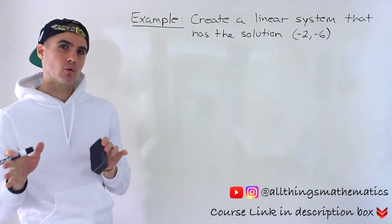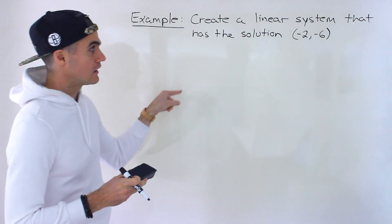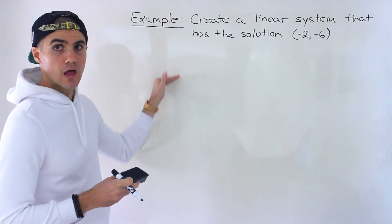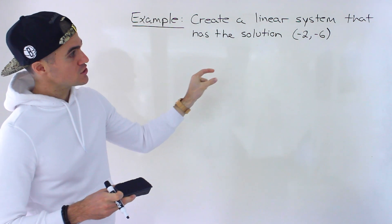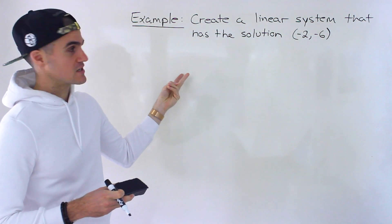So notice in this case, we're kind of going backwards. Usually we're given a linear system, which means two lines, and then we have to find the point of intersection. In this case, we're given the point of intersection, and we have to find two sets of lines.